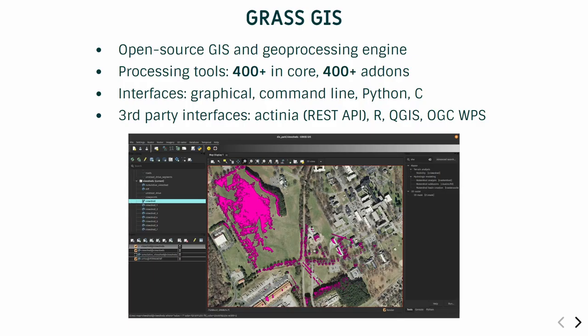In case you don't know — and you should know after all the talks — GRASS GIS is an open source geoprocessing engine. It has a lot of processing tools and also a lot of interfaces. I will be mostly showing examples using bash and Python here.